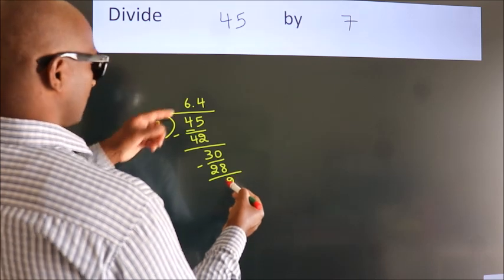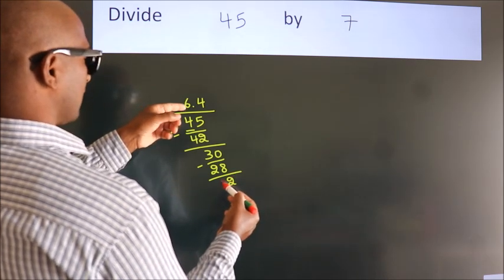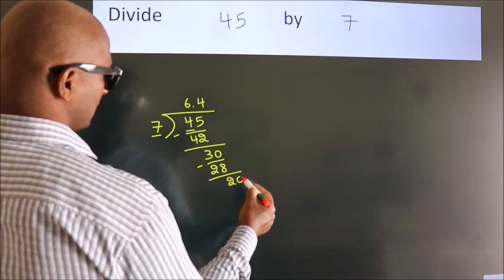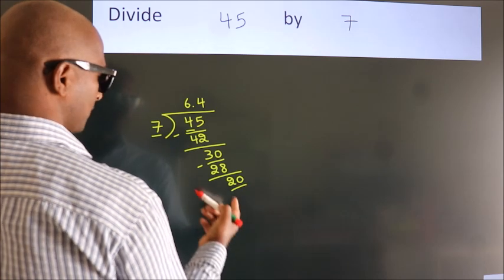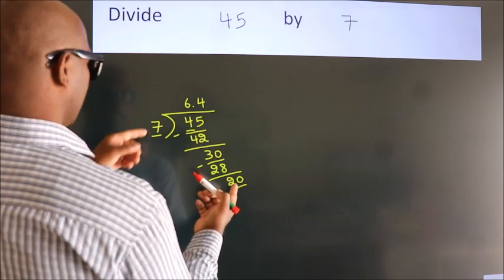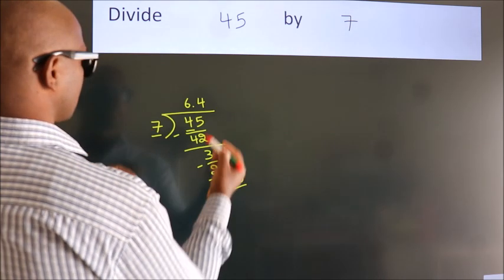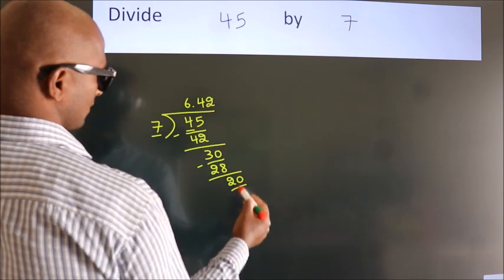After this, we already have the decimal. So directly take 0. So 20. A number close to 20 in 7 table is 7 times 2, 14.